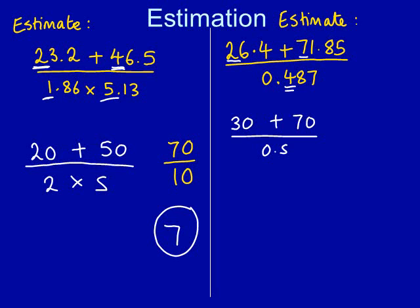So we now have part of our answer, which is 30 add 70 all over 0.5. Just like the previous question, we must work out the top and the bottom of the fraction separately. The top of the fraction, 30 plus 70, is 100. The bottom of the fraction we already know is 0.5.